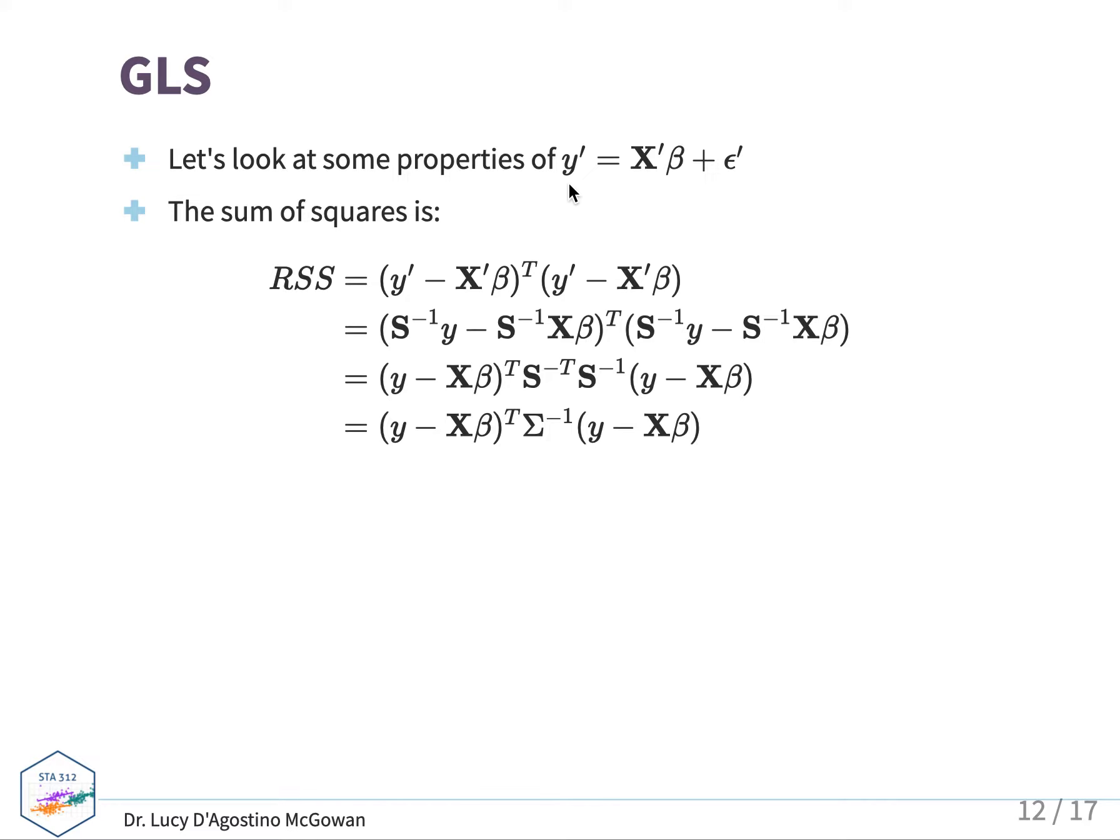When we're doing y prime equals X prime beta plus epsilon prime, the thing we're minimizing is y minus X beta transpose times sigma inverse times y minus X beta.